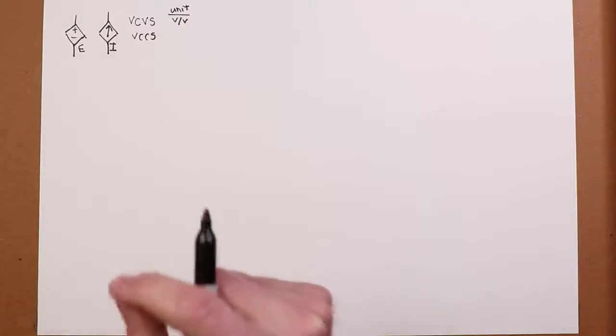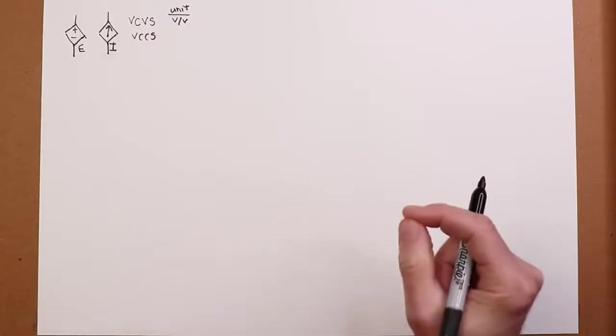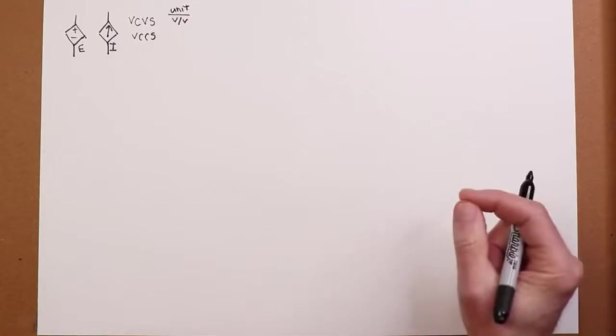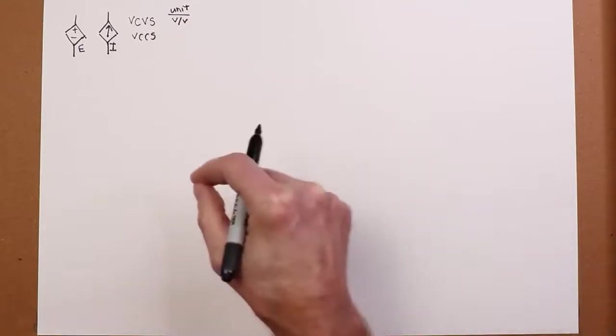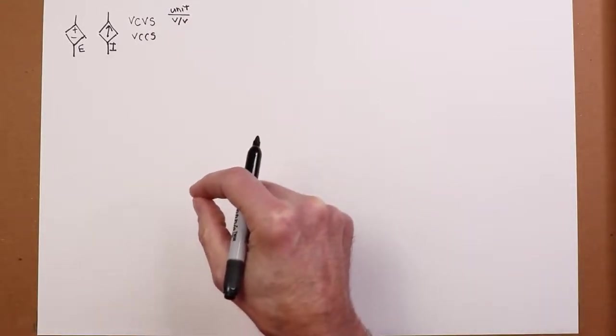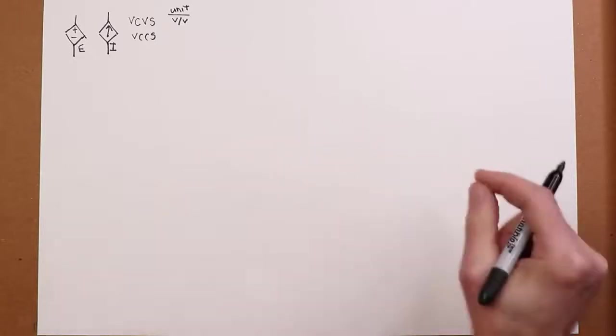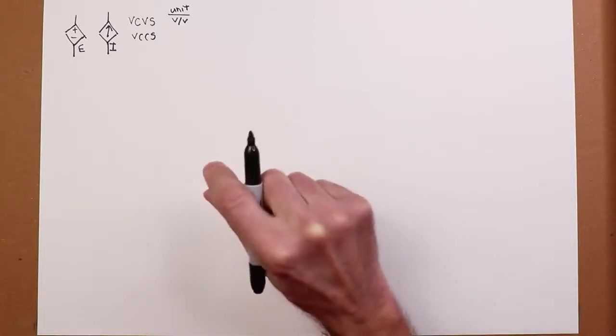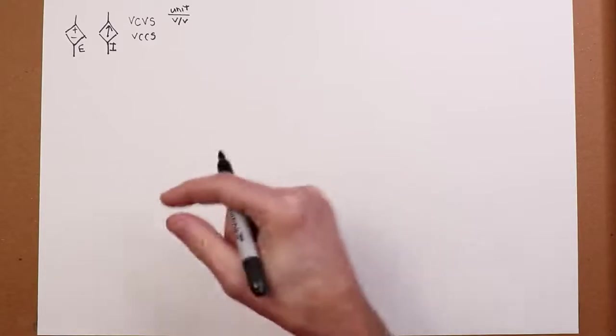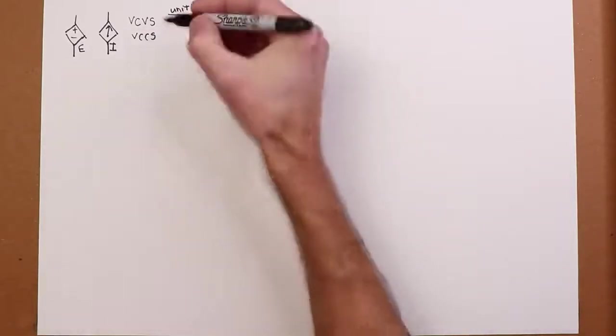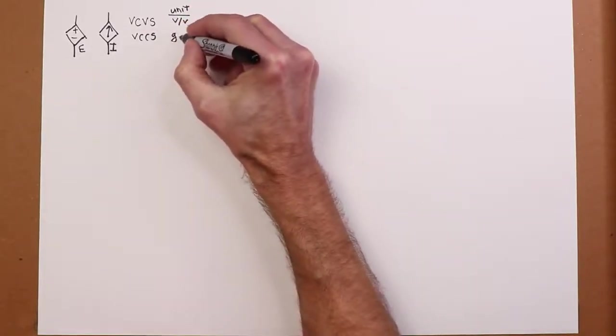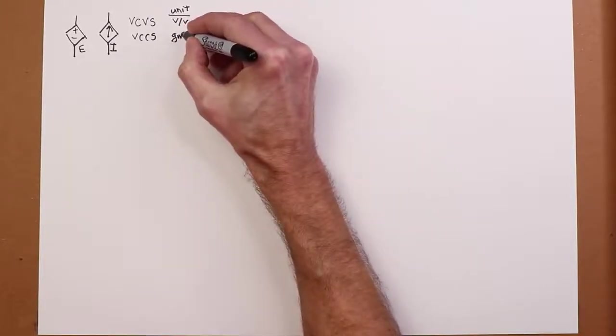Because you've got a voltage controlling a current, in other words volts versus amps, the unit for this is transconductance. We're familiar with conductance. Well, we just call it transconductance for active devices. G is conductance, but we call that GM.